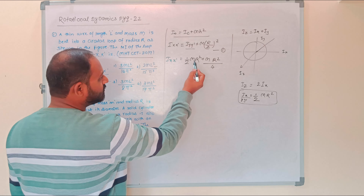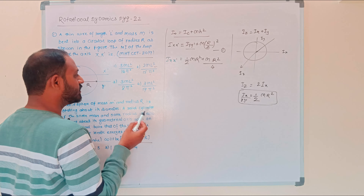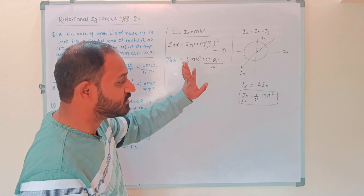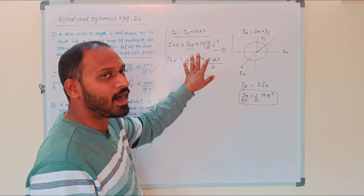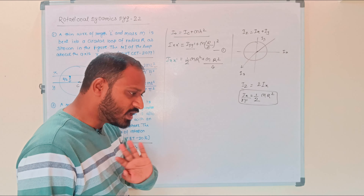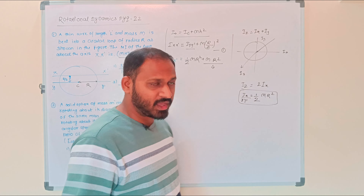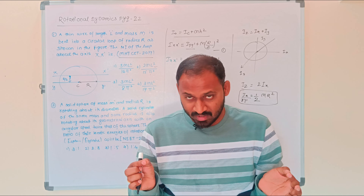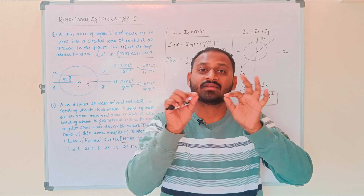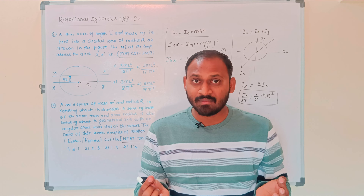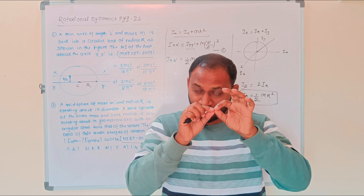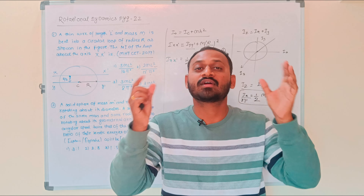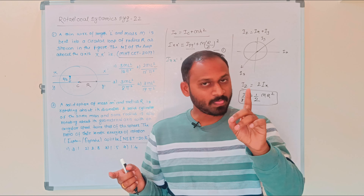The options in the given question contain M, L, and pi as constants. The answer in terms of R needs to be converted in terms of L and pi. Since the wire of length L is bent into a circular loop, the length of the wire becomes the circumference of the circular loop.